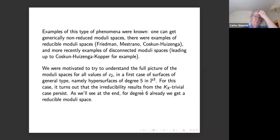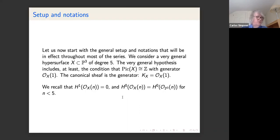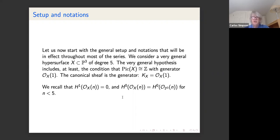Some of those results from the K3 case can still leak over into the general type situation. For degree six there is already an example of a reducible moduli space with at least two irreducible components. Now let me give the general setup and notations we'll use throughout the rest of the lectures: X inside P3 is a very general hypersurface of degree five, and the key hypothesis is that the Picard group of X is Z, generated by OX(1).